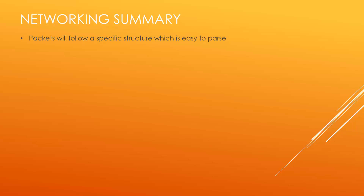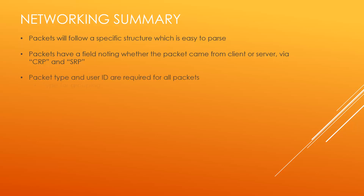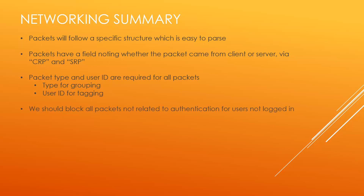As a summary: packets will follow a specific standard structure that is easy to parse, using percent signs as delimiters. Packets will have a field noting whether they came from the client or the server — CRP or SRP. The packet type and user ID are required for all packets: type for grouping similar packets together, and user ID for tagging the packet to a specific user. We should also block all packets not related to authentication for users that aren't logged in — for example, they shouldn't be able to send action packets to move around if they're not in the game. We also want to prevent players from forging packets with different user IDs, which will be tied to the authentication system.